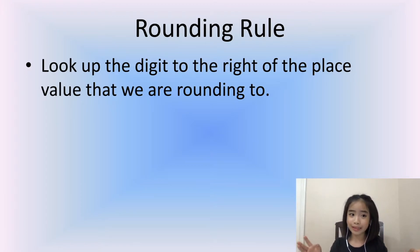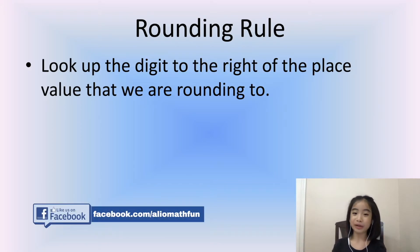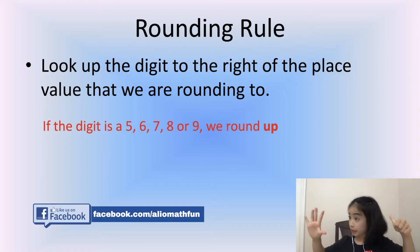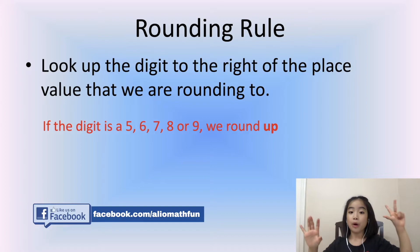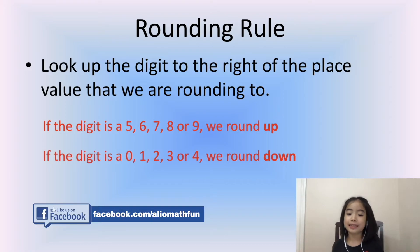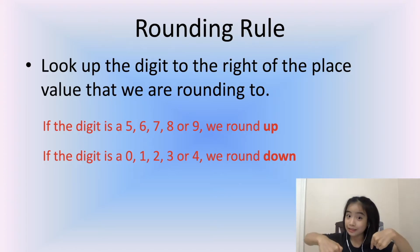The rounding rule is: look at the digit to the right of the place value that we are rounding to. If the digit is 5, 6, 7, 8, or 9, we round up. If the digit is 0, 1, 2, 3, or 4, we round down.